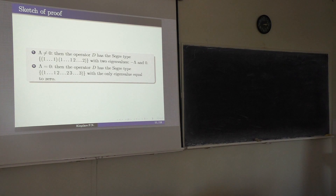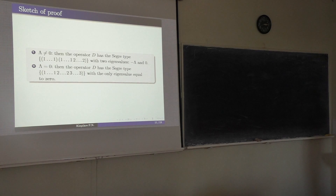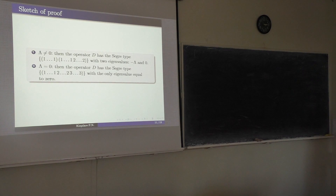This equation gives restrictions on the eigenvalues of operator D and hence the Ricci operator. We have two cases: if lambda is not equal to zero, then operator D has spectral type with eigenvalues minus lambda and zero; if lambda equals zero, then the spectral type has only eigenvalue zero. From this, if the Ricci operator is diagonal in some basis, then the Ricci soliton is trivial. In the Riemannian case, the Ricci operator is always diagonalizable, so all Riemannian algebraic Ricci solitons of this type are trivial.